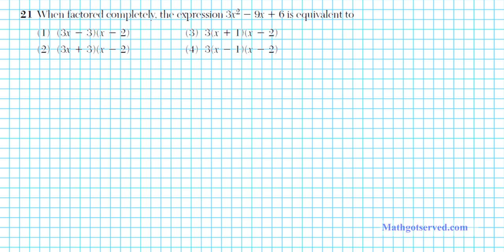Alright, let's take a look at problem number 21. It says when factored completely, the expression 3x squared minus 9x plus 6 is equivalent to. So this is assessing our ability to factor quadratic expressions completely. So let's go ahead and write down the expression 3x squared minus 9x plus 6. If you notice, 3 is a factor of the 3 terms here.